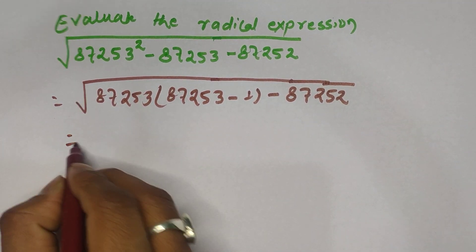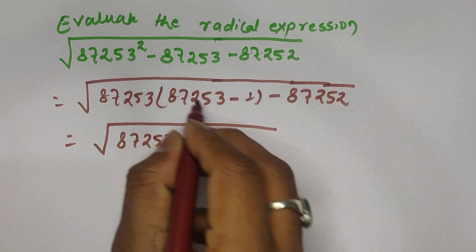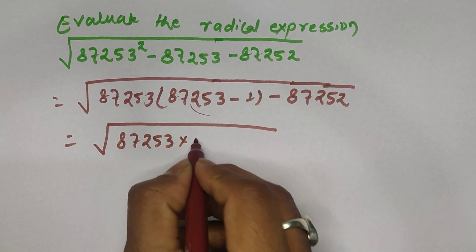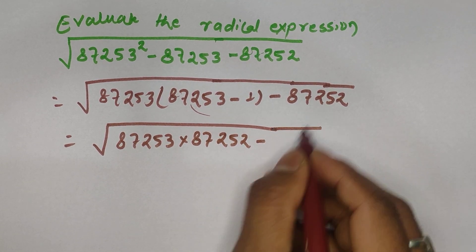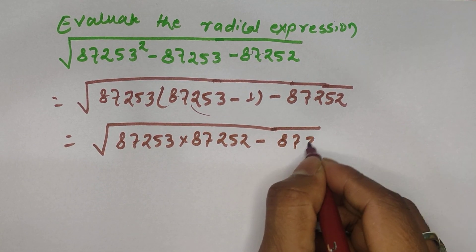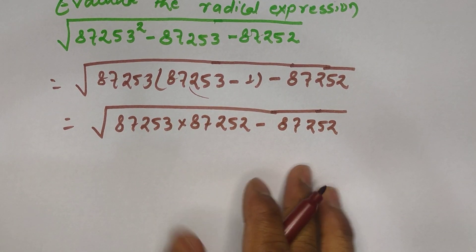This one is the same 87253, and when you subtract this one, then we will get here 87252 and minus this one is again the same 87252. Again, when you analyze these two terms, then you can see that